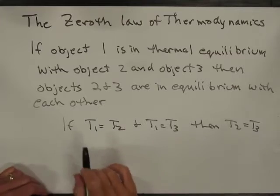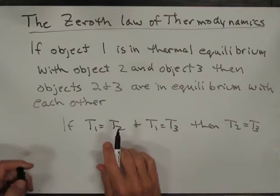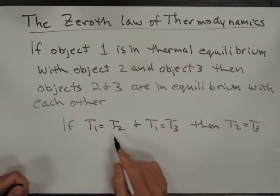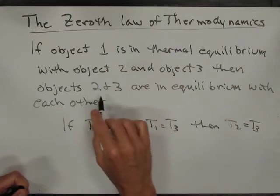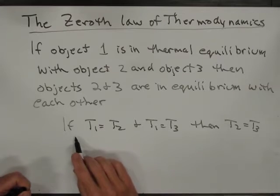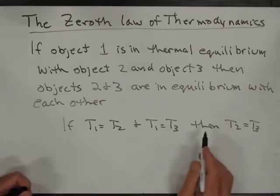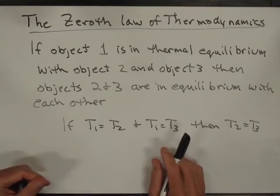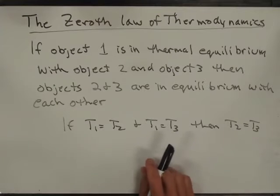The zeroth law of thermodynamics, which was written after the first law, states that if object 1 is in thermal equilibrium with object 2 and with object 3, then objects 2 and 3 are in thermal equilibrium with each other. Or if T1 equals T2 and T1 equals T3, then T2 equals T3. This is basically a statement about thermal equilibrium — the temperature is the same throughout a region that's in thermal equilibrium.